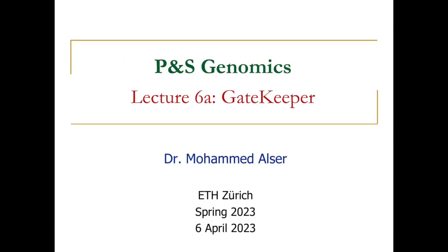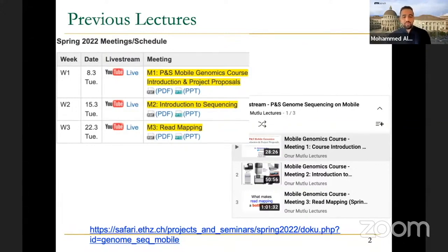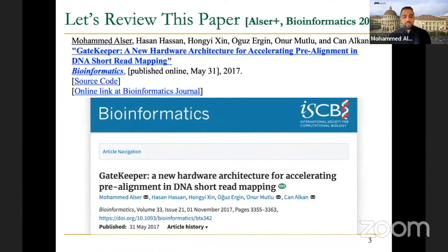Good morning everyone. This is the fourth lecture in the Mobile Genomics course, projects and seminars at ETH Zurich. Today we will continue with the read mapping topic from last week, and specifically explain one of our earliest works called Gatekeeper. The lecture videos are all publicly available online, as are the slides for today. We will cover a new paper called Gatekeeper, published in 2017.